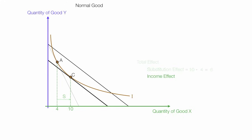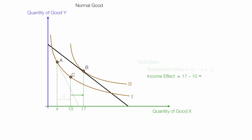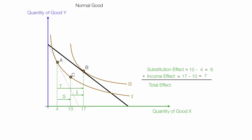Now I will move the budget line back to its correct location, which is point B. To do the substitution effect, I just move it back and forth parallel. And this distance right there is the income effect — that's 17 minus 10, and I will label that I. The total effect is the substitution effect plus the income effect, which is 17 minus 4, equal to 13. I could also take 6 plus 7, which is 13.